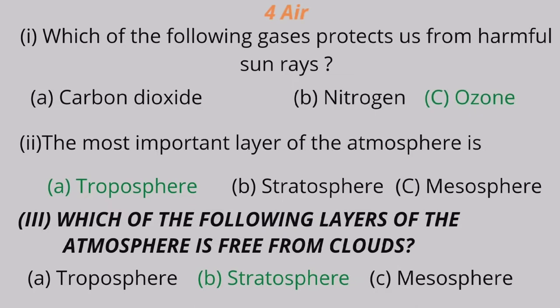Chapter 4: Air. Question 1: Which one of the following gases protects us from harmful sun rays? A. Carbon dioxide, B. Nitrogen, C. Ozone. Ozone is the correct answer.